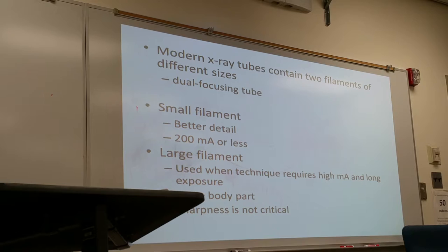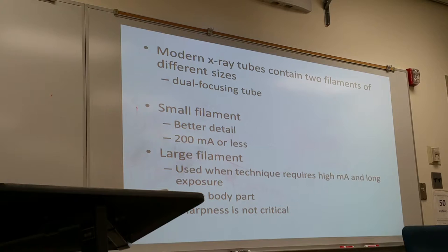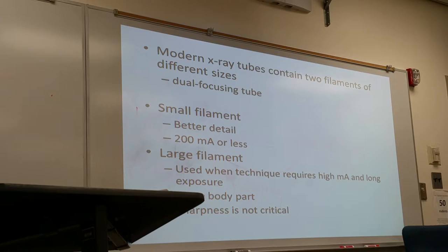The larger filament is used mainly for bigger body parts such as the abdomen and skull, while the small filament is mainly used for extremities like the foot, knee, and hand. The benefit of using a larger filament is that it can withstand high heat, so we can use high mA stations and longer exposure times. The downside is that resolution decreases slightly — you can't really see it with the naked eye, but quality tests show degraded sharpness. So a large filament gives high exposure but lower resolution.